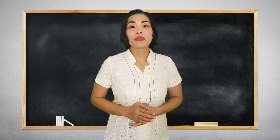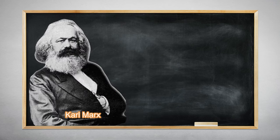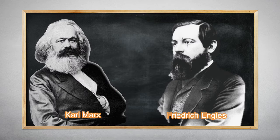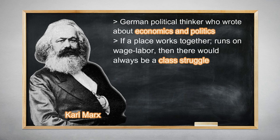Now let's talk about the proponents of Marxist literary approach. Marxist literary approach originates from the works of the 19th century German philosophers Karl Marx and Friedrich Engels. Marx was a German political thinker who wrote about economics and politics. Marx thought if a place works together and runs on wage labor, then there would always be class struggle.